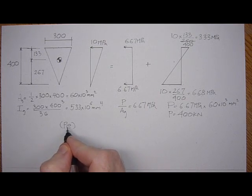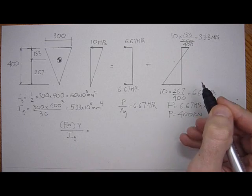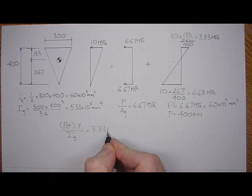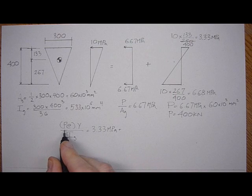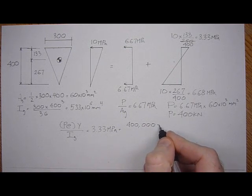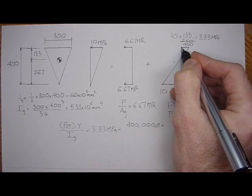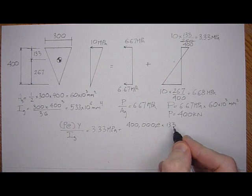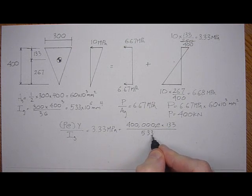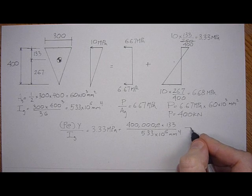P times E times Y over I gross equals the stress. So let's choose top fiber stress from here to here, 3.33 MPa. So that equals P, which is 400,000 newtons, times E, the unknown, times Y, the distance from here to the extreme fibers in bending, 133 millimeters, over I gross, which is 533 times 10 to the 6 millimeters to the fourth. And now we can solve for E.